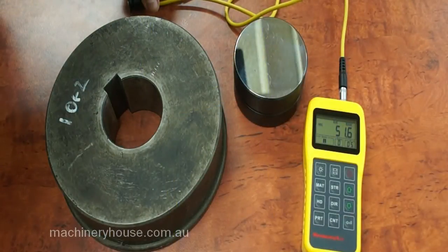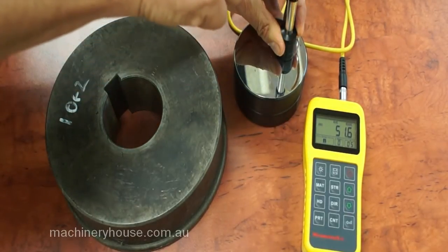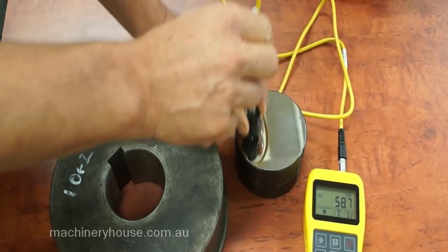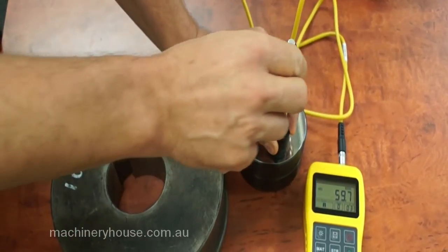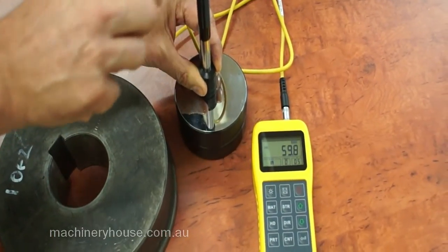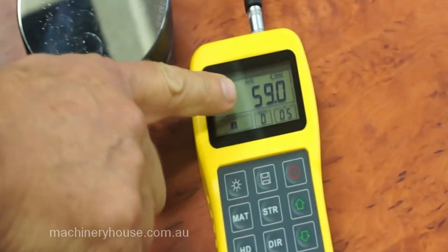I will now do a quick demonstration. Firstly, I will go to our test piece and get an average hardness of that test piece over 5 hits. You will see now the average that has come up on the screen.